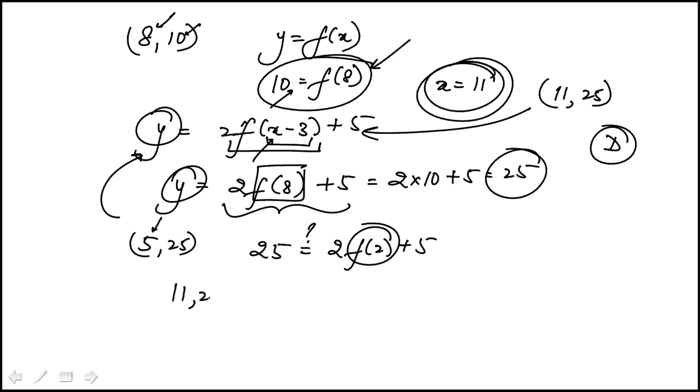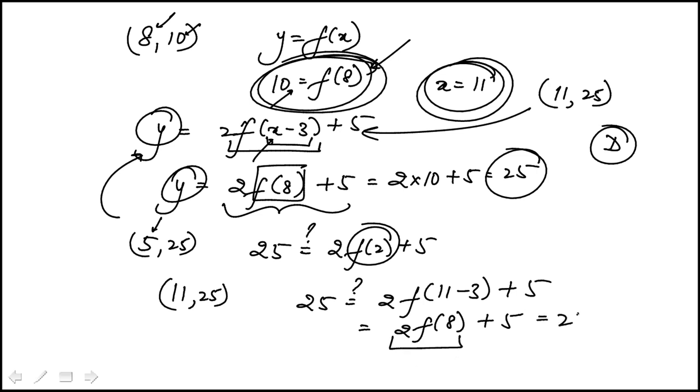I'll do it for the correct answer now that we know it's (11,25), which is, is 25 equal to 2 times f of 11 minus 3 plus 5. This is 2 times f of 8 plus 5. We know f of 8 is 10, so this is 2 times 10. 20 plus 5 is 25.